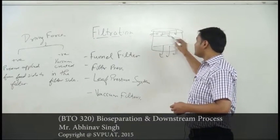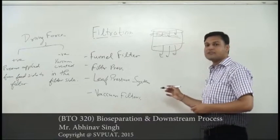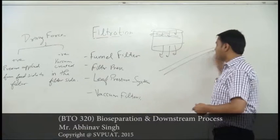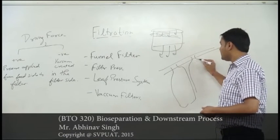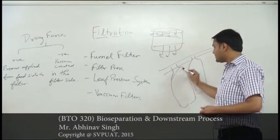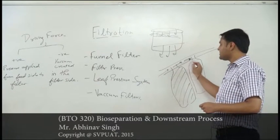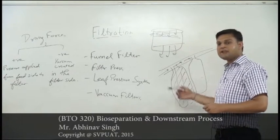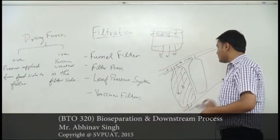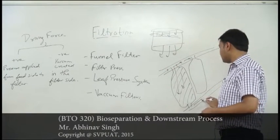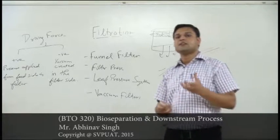The next industrial equipment is the leaf pressure system, the most advanced and commercially valuable technique. Feed is passed through a tube and divided into different leaf-like appendages, each containing a filter of a particular pore size. As the feed passes through, the cake is collected on one side and the filtered material passes down through a lower tube. One tube contains the feed, the other contains the filtered product.